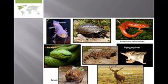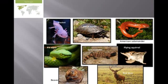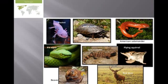The axolotl larva, known for neoteny, is actually the larva of a salamander found here. It matures even in the larval stage — that is the axolotl larva. The musk turtle is very common in the Nearctic region. American salamanders, beautifully colored, can be seen here. The pit viper is a very interesting animal you can locate from here. Flying squirrels are quite interesting, and beavers are very common in the Nearctic region.